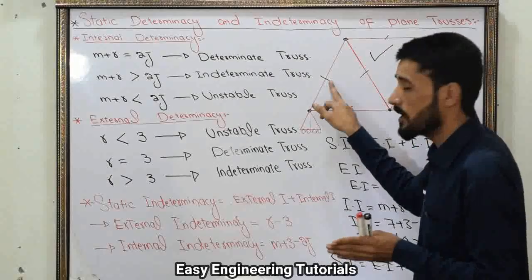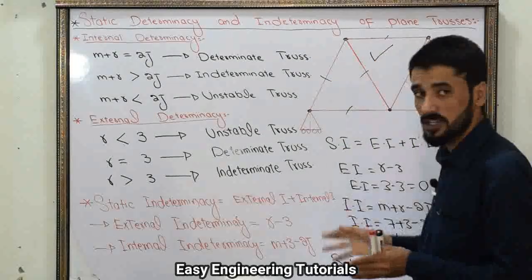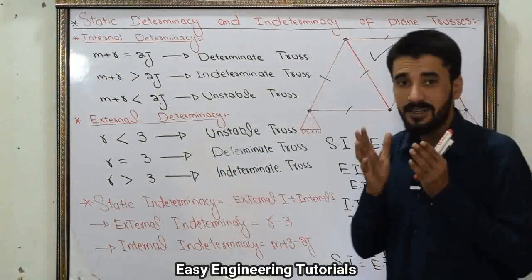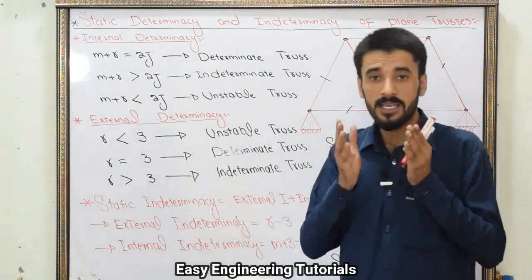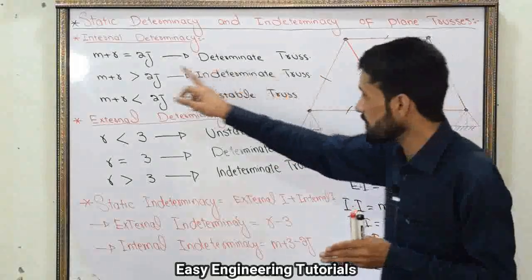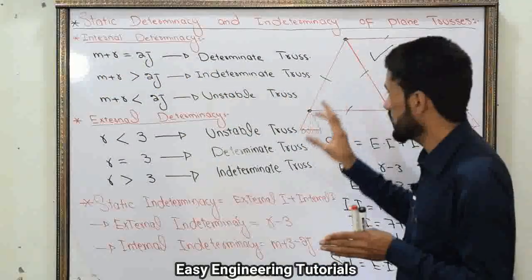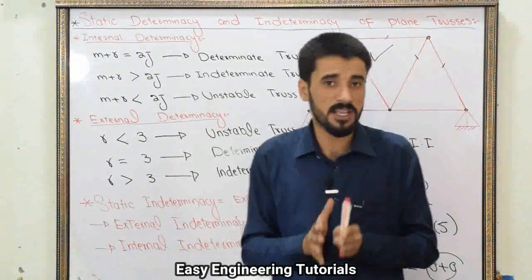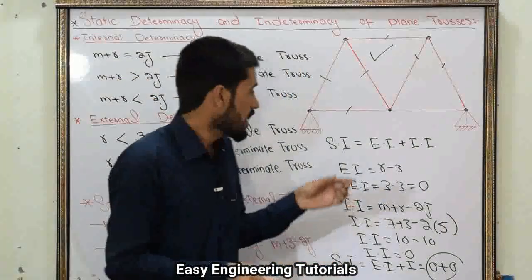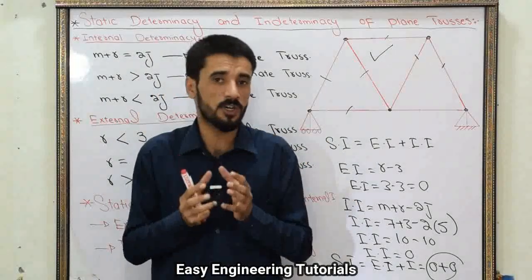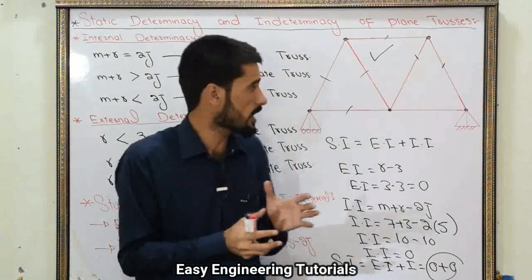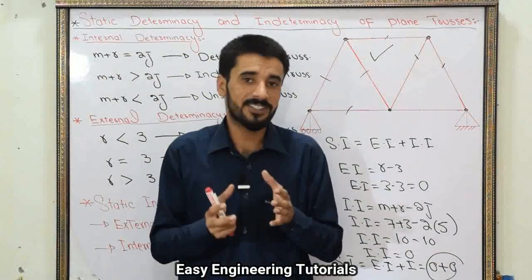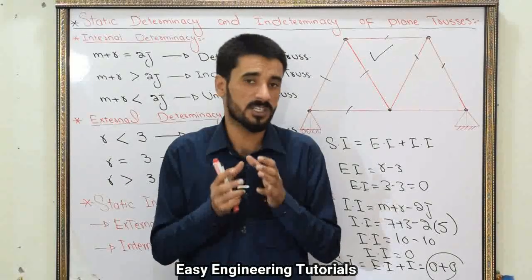Here, M is the number of members, R is the number of unknown reaction forces, and J is the number of joints.